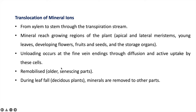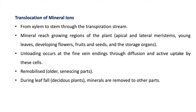Whenever damage occurs in any part of the plant, the plant remobilizes mineral ions to other parts. During leaf fall, minerals are removed from the leaf and reach other parts of the plant. Some elements easily mobilize within the plant system; these elements are phosphorus, sulfur, nitrogen, and potassium.